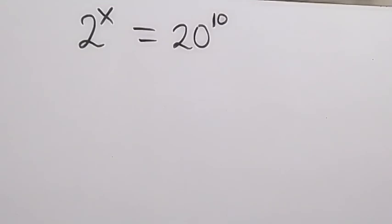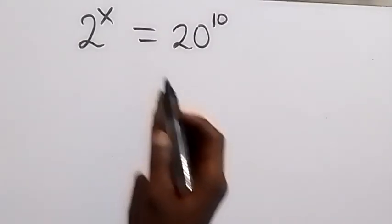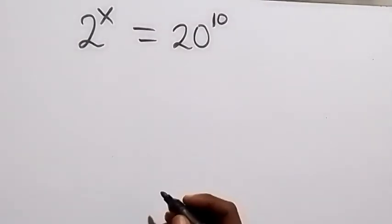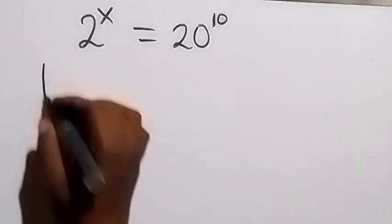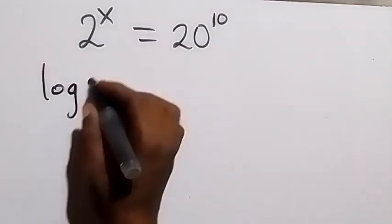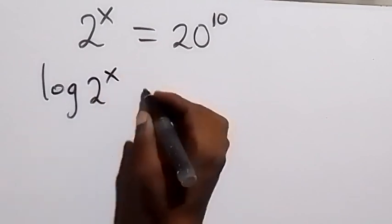Hello, you are welcome. How to solve this problem: 2 raised to power x equals 20 raised to power 10. From here, let's take the log on both sides. We have log 2^x equals to log 20^10.